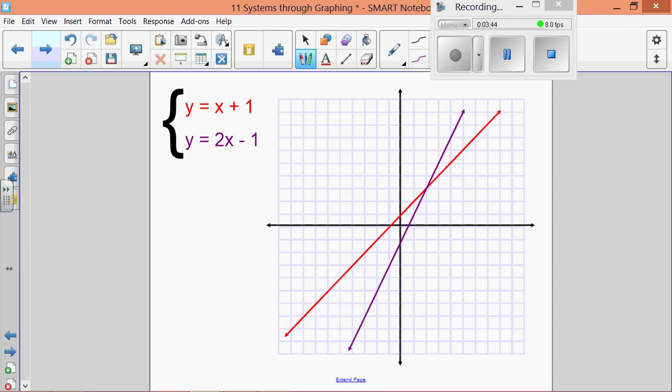Notice that we can also see the solution for systems graphically. Now, when we've looked at one equation on its own and ask how many solutions does the equation have, we always have infinitely many. For example, y equals x plus 1, how many solutions are there? Well, there's infinitely many. Every point on that red line is a solution for that equation.